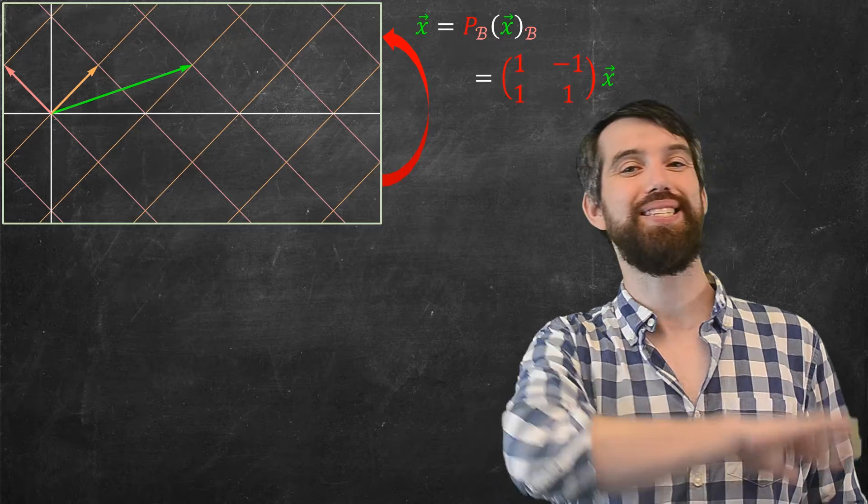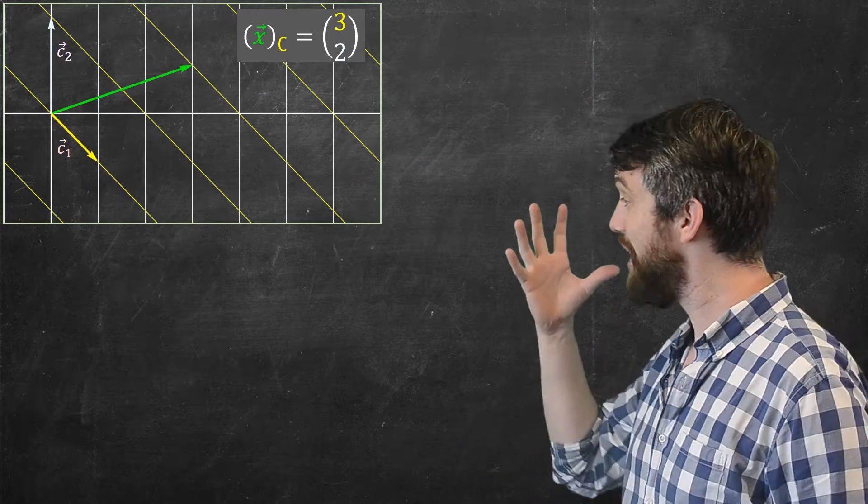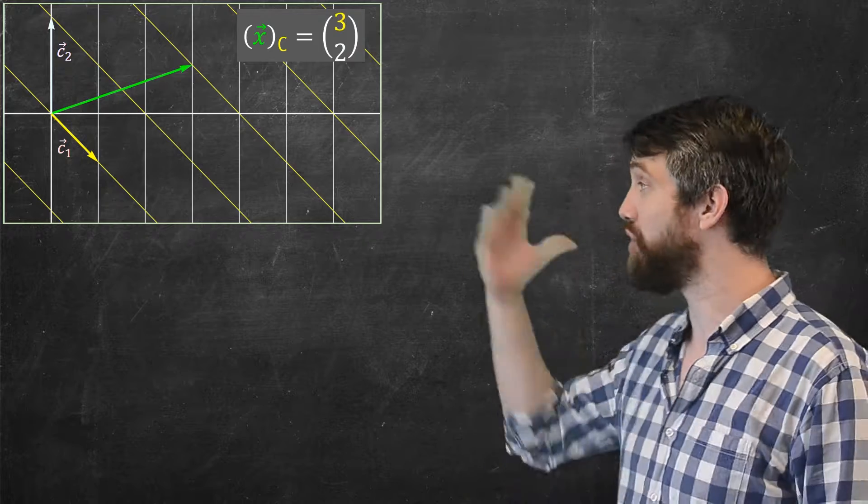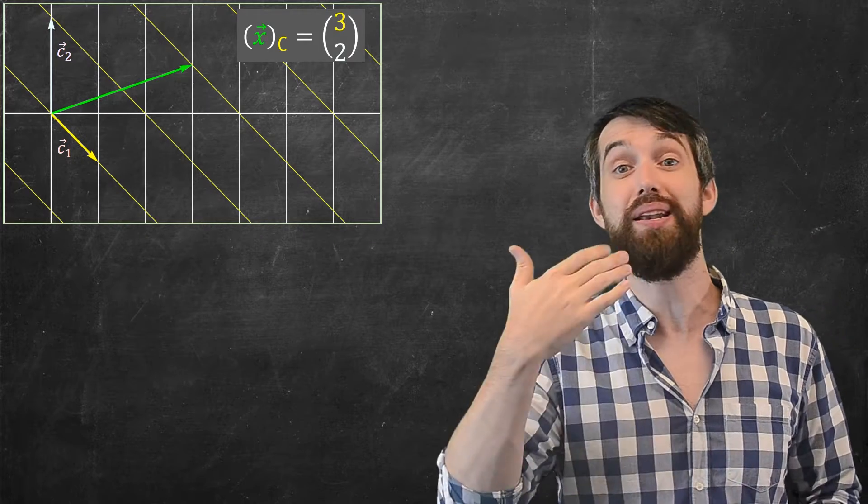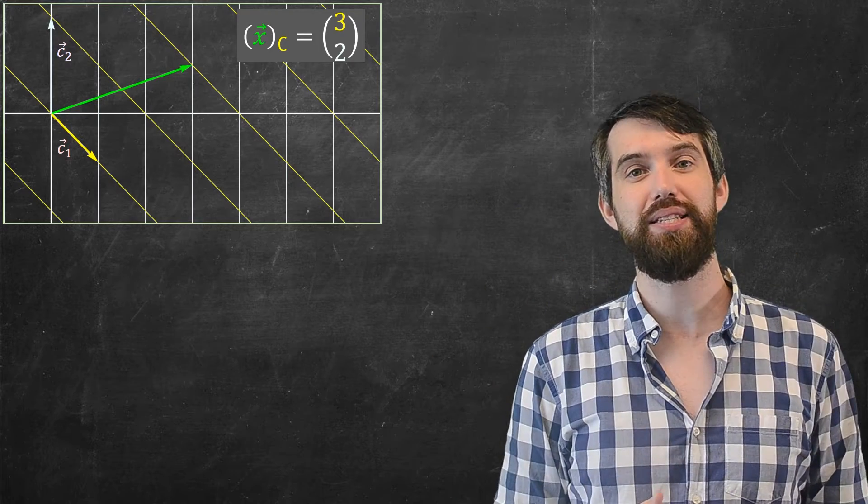All right. Let me repeat this exact same story again, but now for a c basis. So again, I've got a c basis, a different one now. I've got my vector x. It's the same vector x I had before, but now it looks like 3, 2 from the perspective of somebody in the c basis.